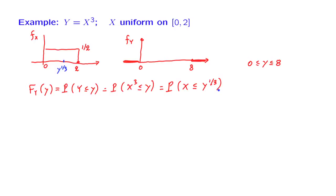We want the probability that x is less than or equal to that value. So that probability is equal to this area under the PDF of x. And since it is uniform, this area is easy to find. It's the height, which is 1 half, times the base, which is y to the 1 third. So we continue this calculation and we get 1 half times y to the 1 third. So this is the formula for the CDF of y for values of little y between 0 and 8.